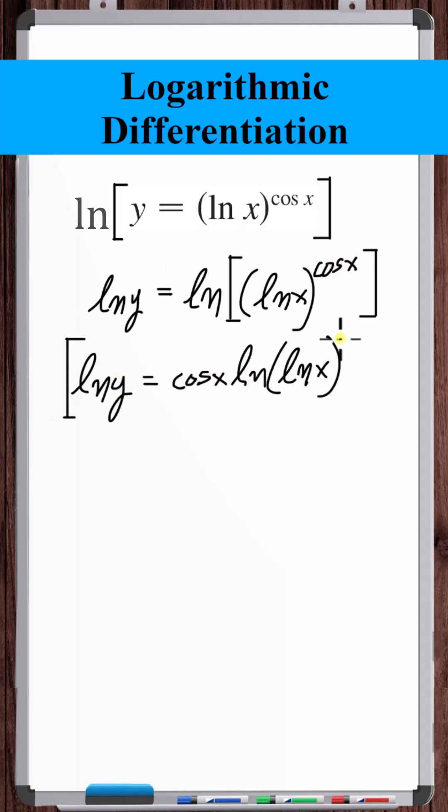Take the derivative of the entire equation with respect to x. The derivative with respect to x of natural log of y is 1 over y, y prime.